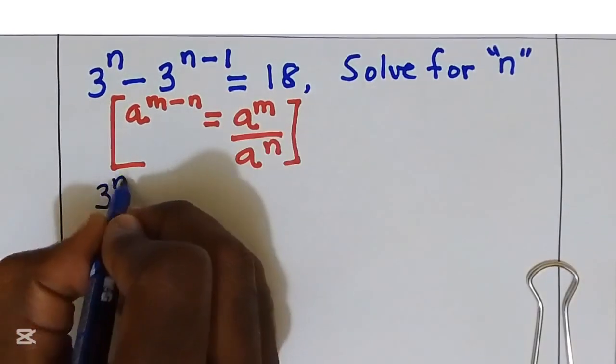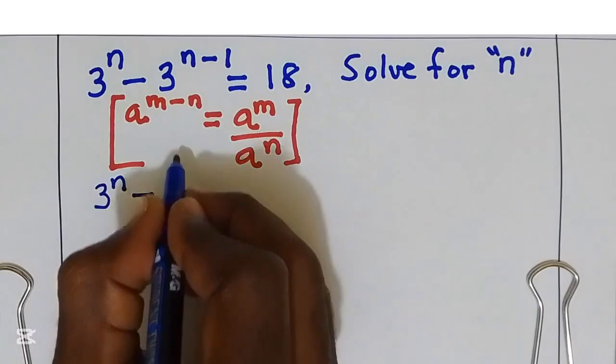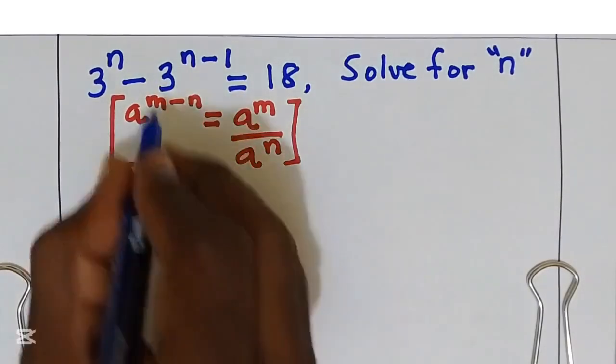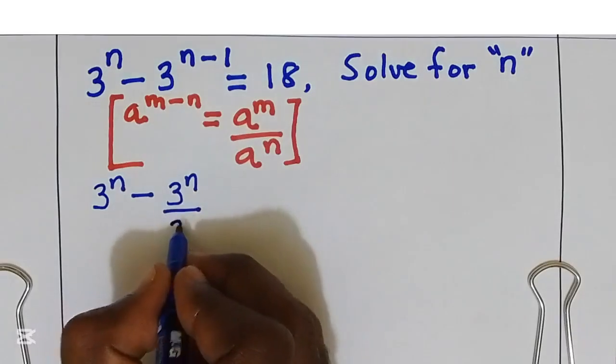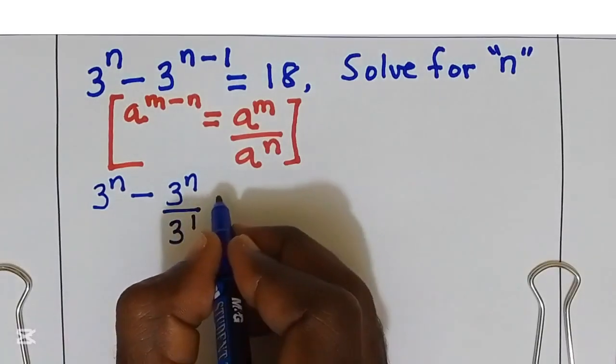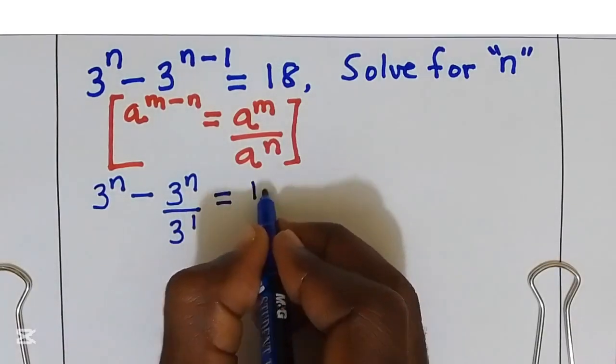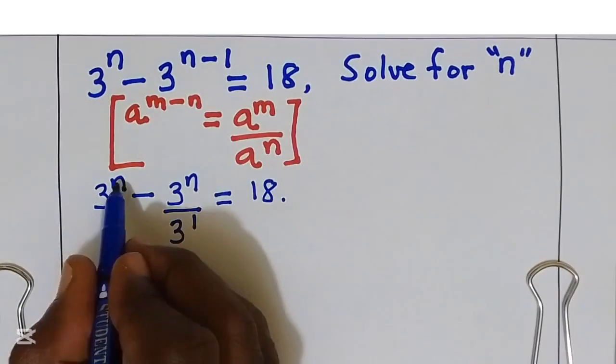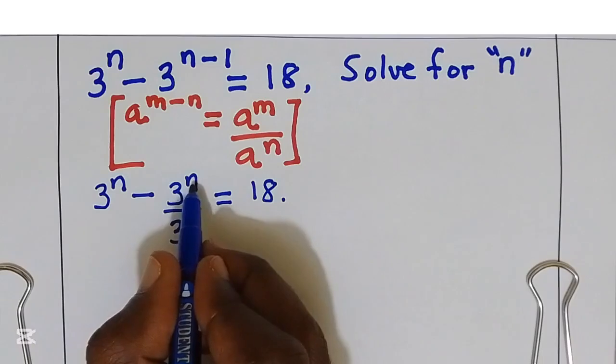3 power n minus 3 power n divide by 3 power 1. This is equal to 18. 3 power n, they are common. I'm going to factor them out.